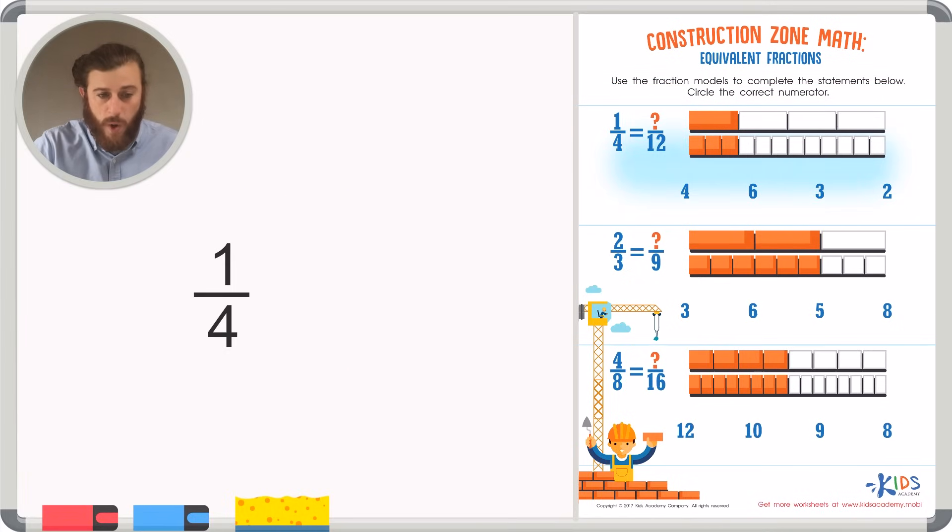Let's look at our first example: one-fourth and blank twelfths. We know that twelve is the denominator here, as is four. So that means in the first bar, there are a total of four pieces. And because one is the numerator, there is one piece shaded in. In our second fraction, we know that there are twelve pieces in total, because twelve is our denominator. But what's the numerator?